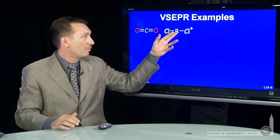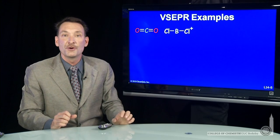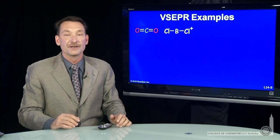Another example, boron dichloride with a positive charge. Three things, steric number two around the central atom, linear arrangement.